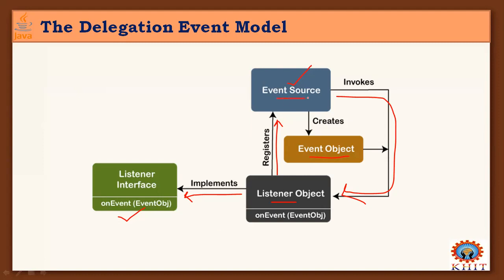Events are generated by an event source by creating event objects, and those event objects are received by listener objects because those listeners are registered with the source event generator. After receiving the event, it is processed based on the methods defined in that particular listener interface. The listener object is processed by implementing the listener interface based on the appropriate method, and then returns a response to the user.